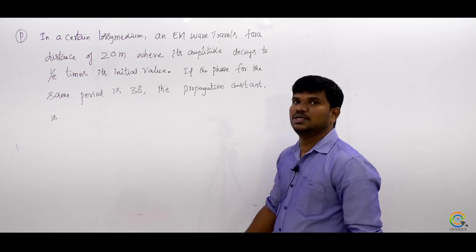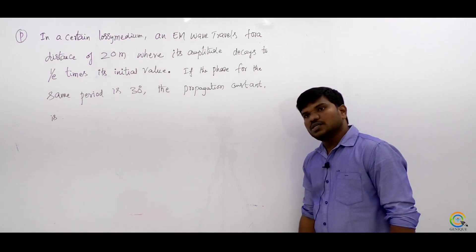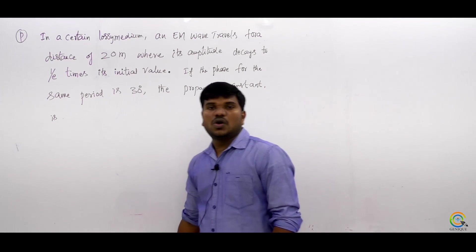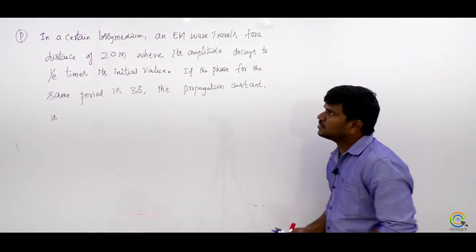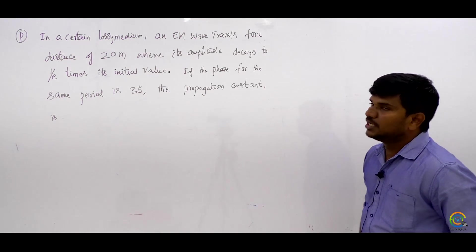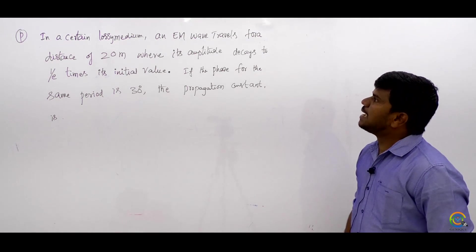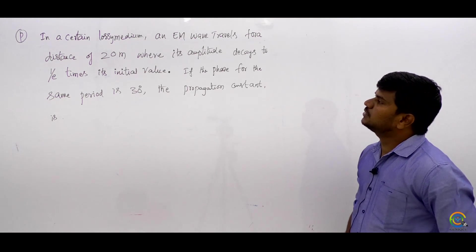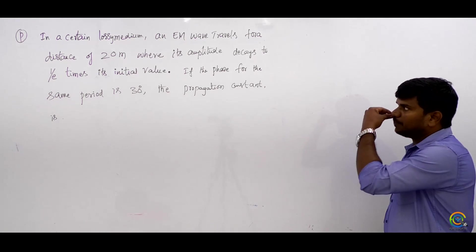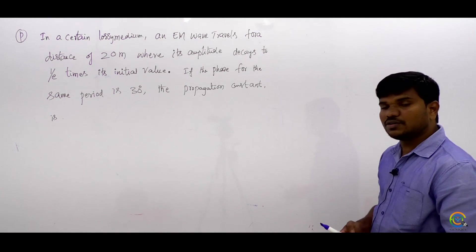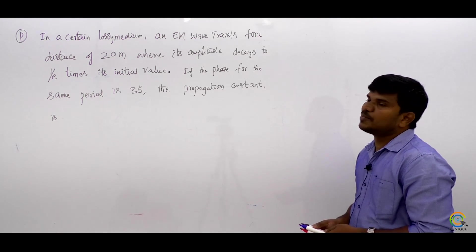Observe this — it is an EM wave given. We have to find the propagation constant. The phase is given. In a certain lossy medium, an EM wave travels for a distance of 20 meters where its amplitude decays to 1 by E times of its initial value. If the phase for the same period is 30 degrees, then the propagation constant is? We have to find the propagation constant, so before that we have to know what is the propagation constant expression.